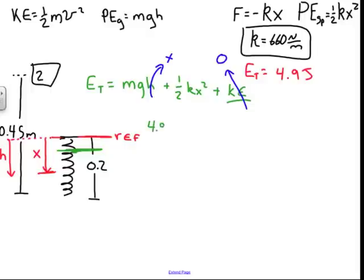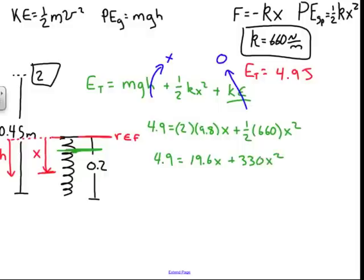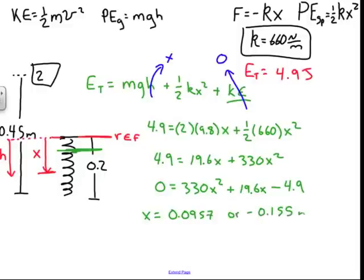So I have 4.9 joules, that's the total energy, is my 2 times 9.8, that's the mgh, times X that I'm solving for plus 1/2 of 660 times X squared. 4.9 equals 19.6X plus 330X squared. So zero is equal to 330X squared plus 19.6X minus, because I'm swinging that term over, 4.9. And I find that X, again, has two values, 0.0957, or negative 0.155 meters. And you'll notice that's actually what we had before. So the X is dropping, it's negative, it's below the reference, whereas before I was solving for h.